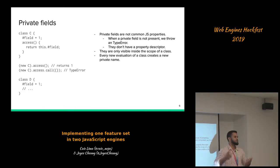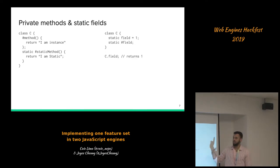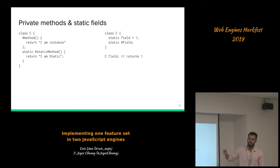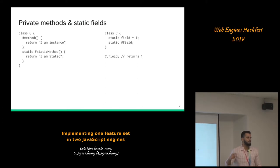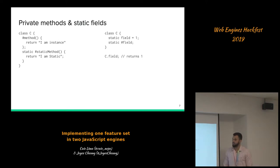That's how we declare private methods and also static private methods and static private fields. It follows the same thing as public and static methods but instead of using a common name you put the hash in front. The hash in front is a modifier saying this is a private name. Static fields follow the same syntax as public fields but have 'static' in front, and you can access a static field using the class name dot field.